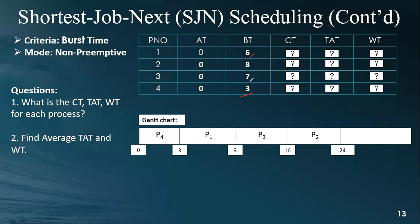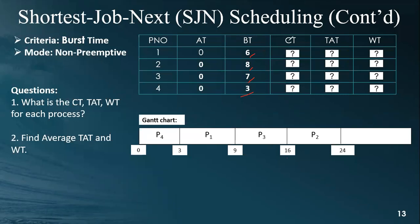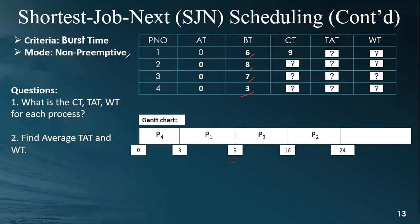After process one comes process three, and finally process two. In the Gantt chart: process four runs from 0 to 3 seconds, process one from 3 to 9 seconds (3+6=9), process three from 9 to 16 seconds (9+7=16), and process two from 16 to 24 seconds (16+8=24). The completion time for process one is 9 seconds, and process two finishes at 24 seconds.